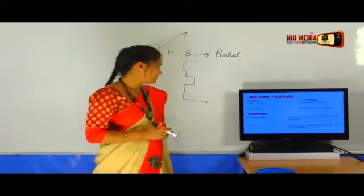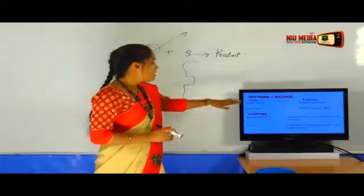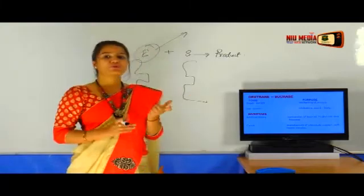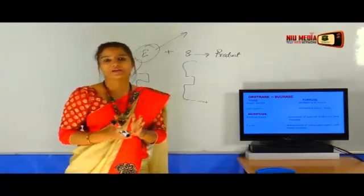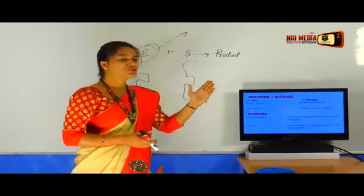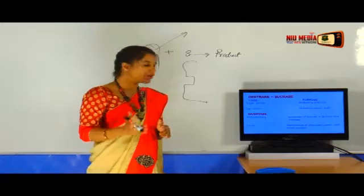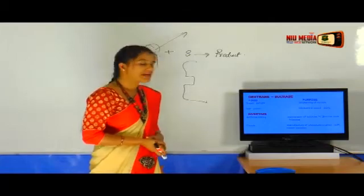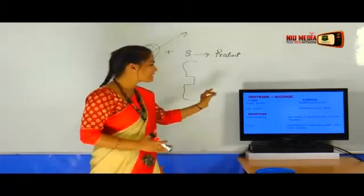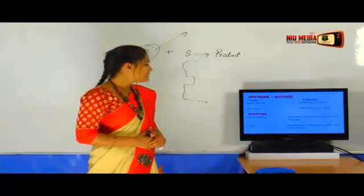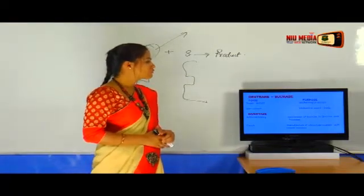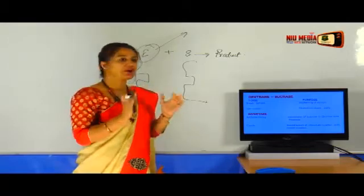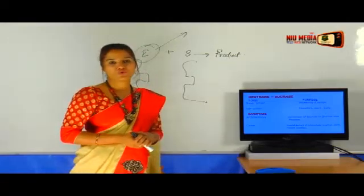We have dextranase and sucrase together. The food is sugar syrup or ice cream. This is basically used for the thickening. Thickening of syrups and thickening agent for ice cream also. Then we have invertase. Invertase is very common. It is used in artificial honey. Conversion of sucrose to glucose and fructose. This conversion occurs when this enzyme acts. In candy, manufacture of chocolate-coated soft cream candies. That softness and coated softness comes with this enzyme which is known as invertase.